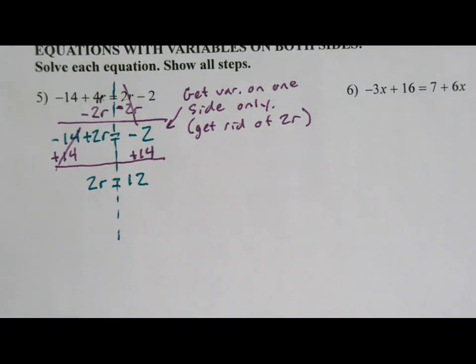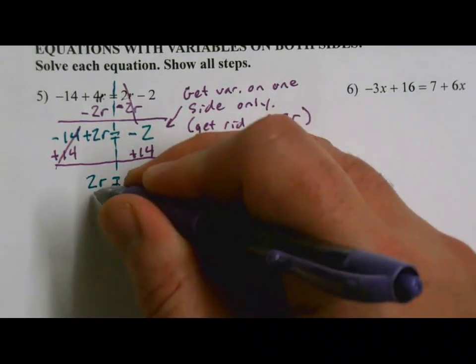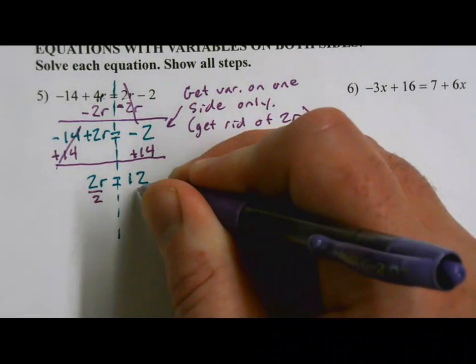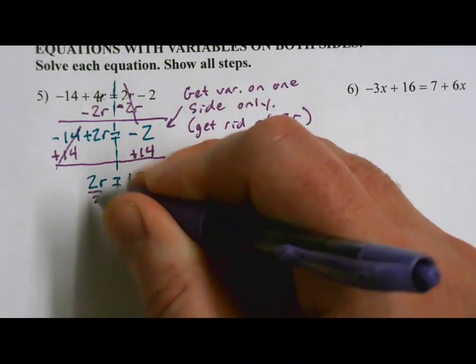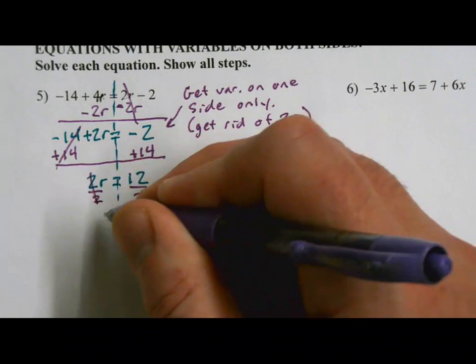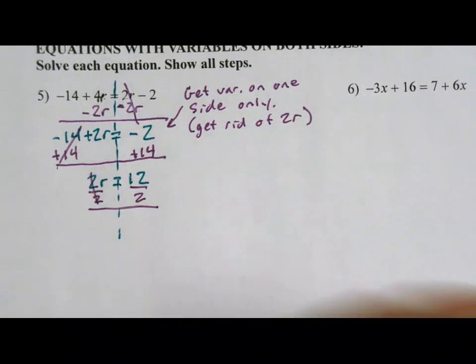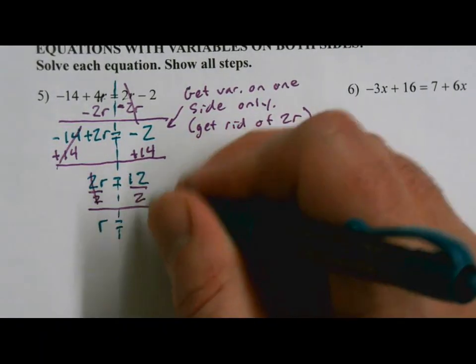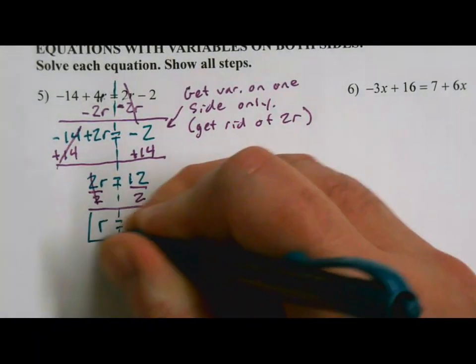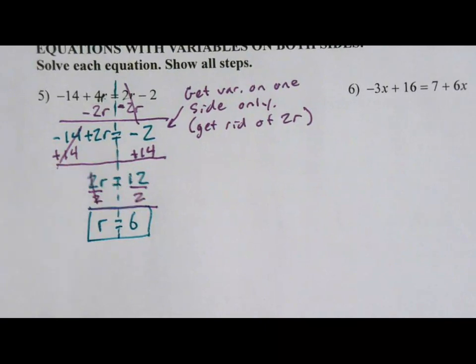Okay, we are almost there. Just need to get rid of that 2. That 2 is multiplying by the r, so we'll divide by 2 on both sides. Multiplication and division will cancel and leave us with just one r. Equal sign comes down. Over here I have 12 divided by 2, which is 6. And I think that my solution is r equals 6.